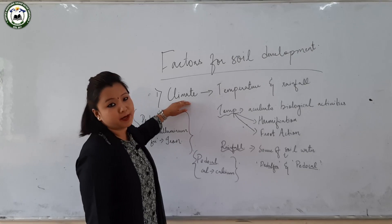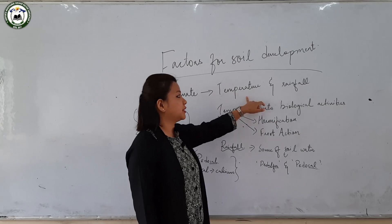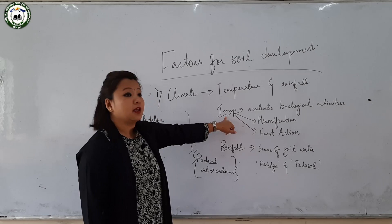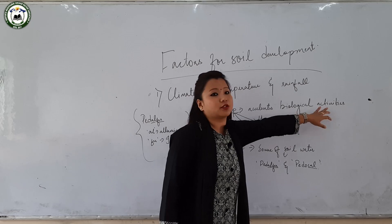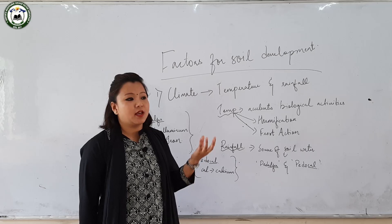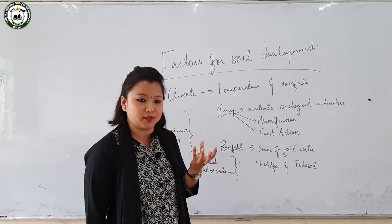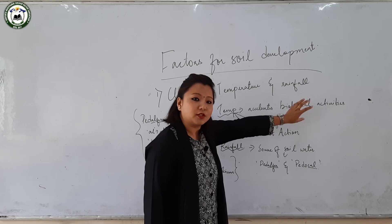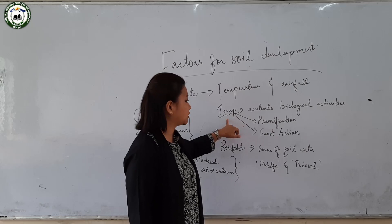Talking about the climatic factor: it comprises two elements — temperature and rainfall, which work simultaneously. In the case of temperature, in warm or humid climates there is acceleration of biological activities. When there is acceleration of biological activities, there is faster decay of remains of plants and animals. Because of that, there is the process of humification, where humus or organic matter is added to the soil, making the soil rich.